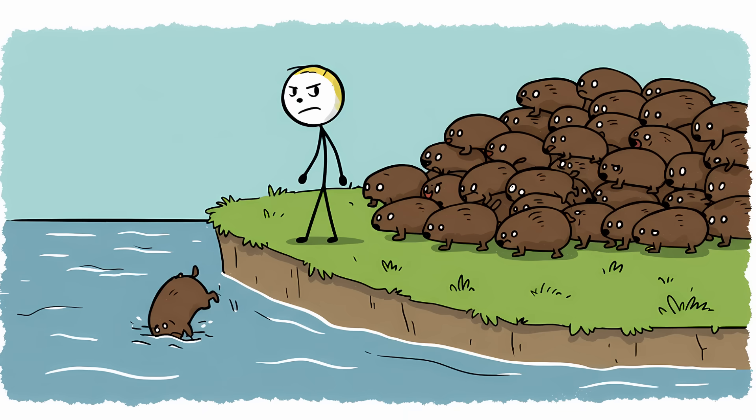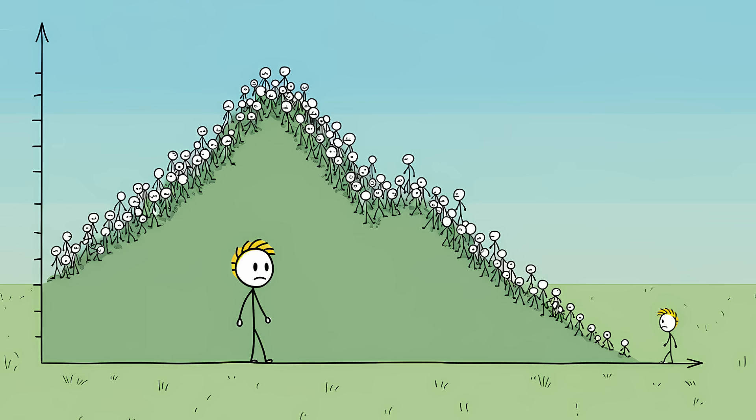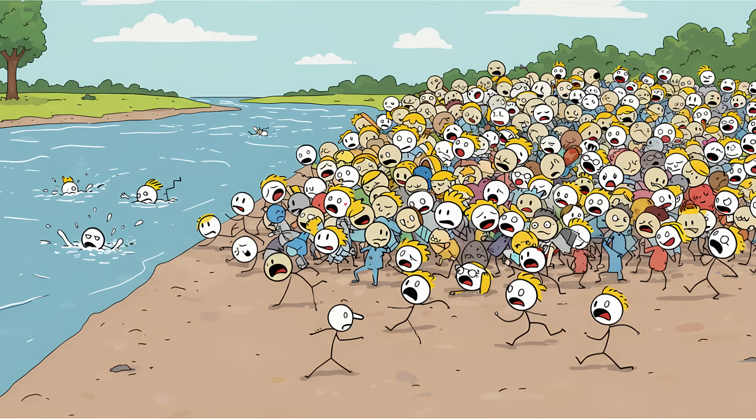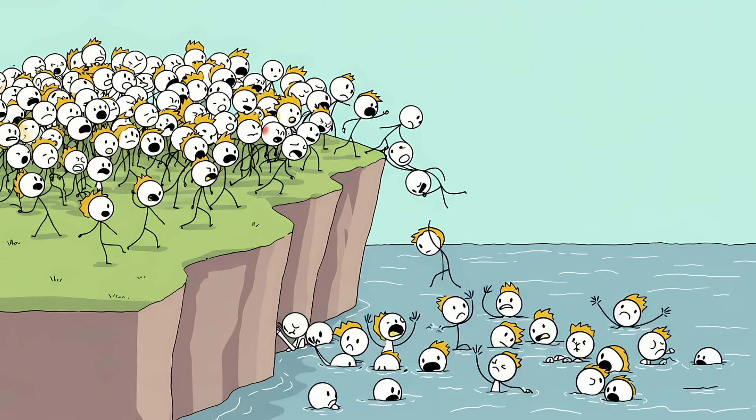The truth is much less cinematic. Lemming populations do experience massive boom-and-bust cycles. When their numbers explode, they exhaust their food supply and are forced to migrate in huge groups to find new territory. They are good swimmers, but when they reach a large body of water like a river or a fjord, their sheer numbers and desperation can cause a chaotic pileup at the water's edge. Some get pushed in, some jump in trying to cross, and many inevitably drown.